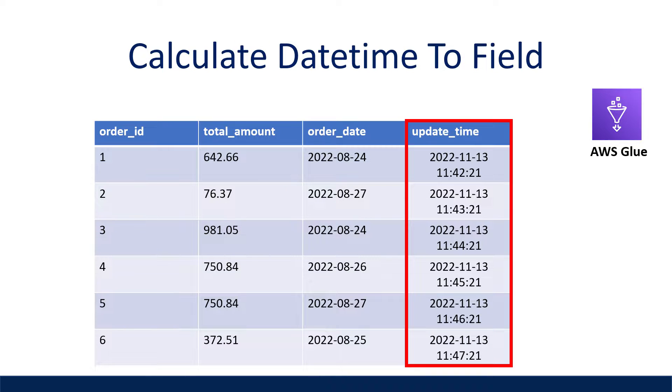The third example is how we can calculate the current date time and assign it to a new field. All right, let's get started.